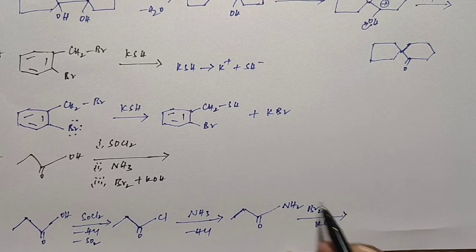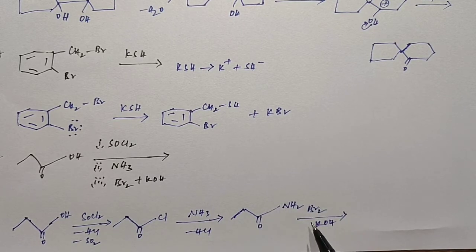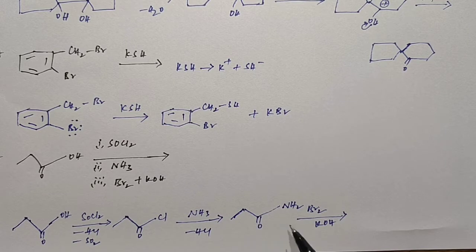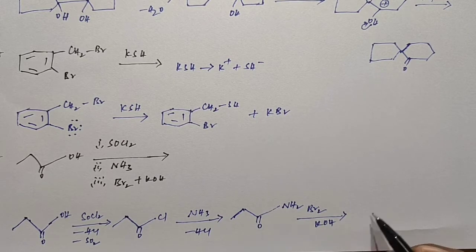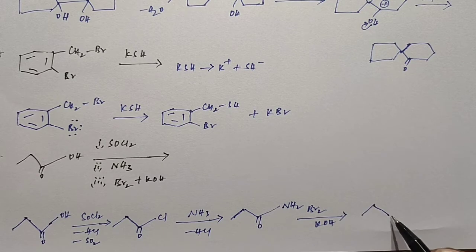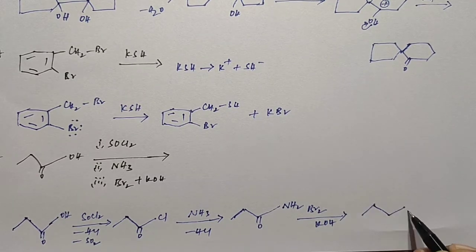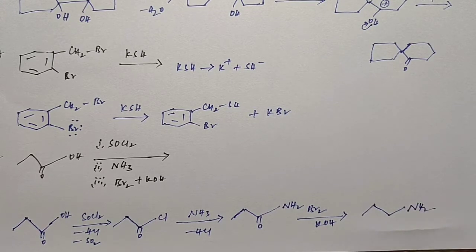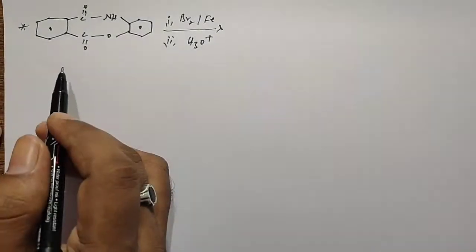The amide then reacts with bromine in potassium hydroxide solution — this is the Hofmann bromide degradation reaction. In Hofmann bromide degradation, the amide group is converted: the CO group disappears, and we get the final product — an amine with one fewer carbon.